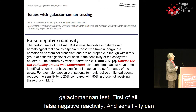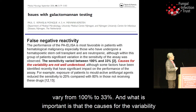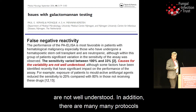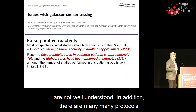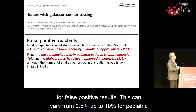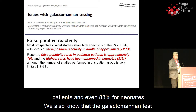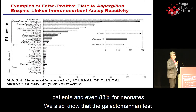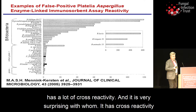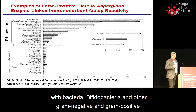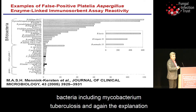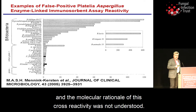But in spite of such importance, there are many papers which describe a variety of issues derived from the use of galactomannan tests. First of all, false negative reactivity — sensitivity can vary from 100% to 53%, and the causes for this variability are not well understood. In addition, there are many reports of false positive results, and their amounts can vary from 2.5% up to 10% for pediatric patients and even 83% for neonates. We also know that the galactomannan test has a lot of cross-reactivity — very surprisingly — with bacteria, bifidobacteria, and other gram-negative and gram-positive bacteria, including Mycobacterium tuberculosis. The molecular rationale of this cross-reactivity was not understood.